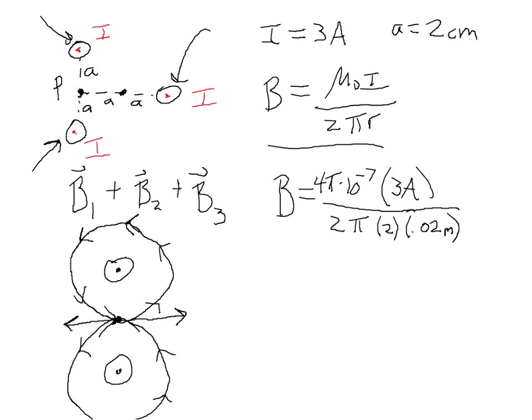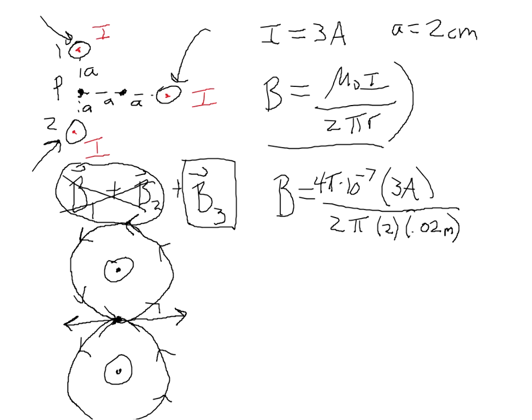Because all the numbers in the equation are the same for both of those wires — both have a current of 3 amps and both are at a distance of 2A from point P — the magnitudes of those two fields are the same, but their directions are opposite. So the magnetic fields due to wire 1 and wire 2 cancel each other out, and I don't even have to calculate them. The total magnetic field at point P is simply the magnetic field due to wire number 3.